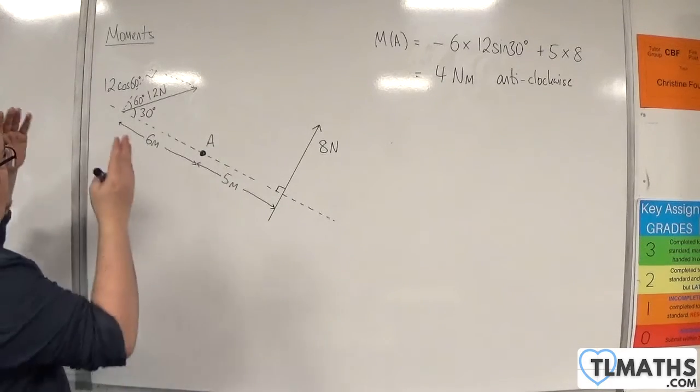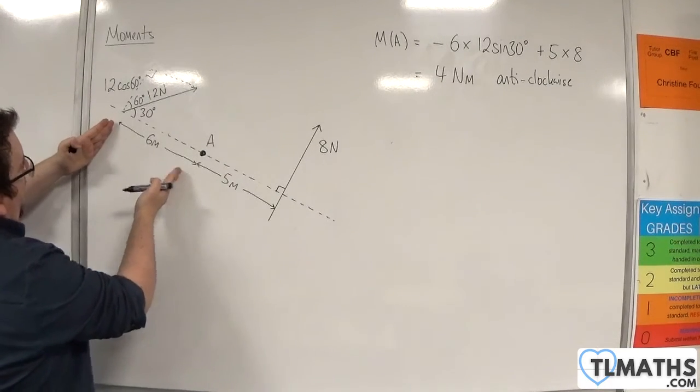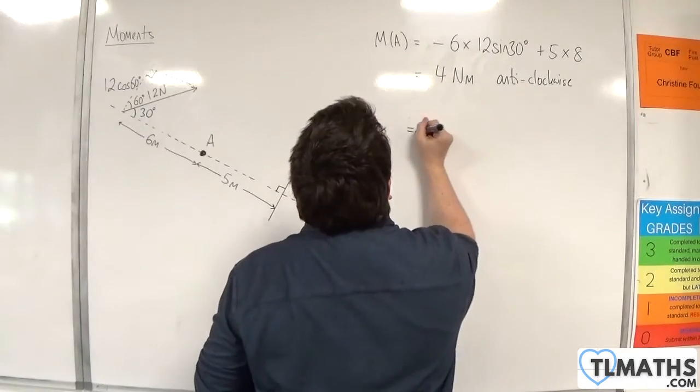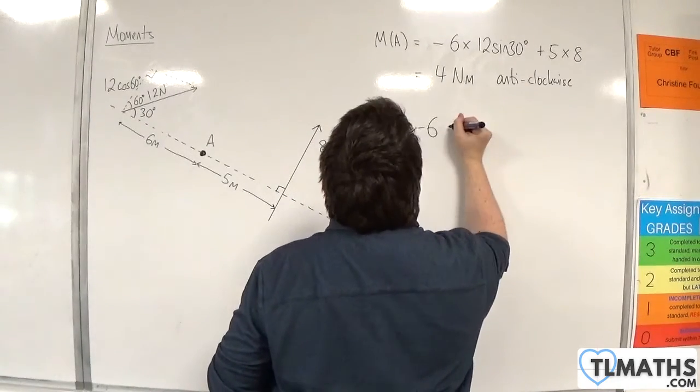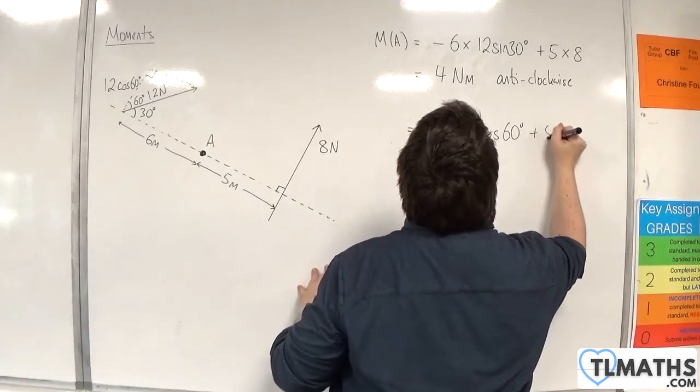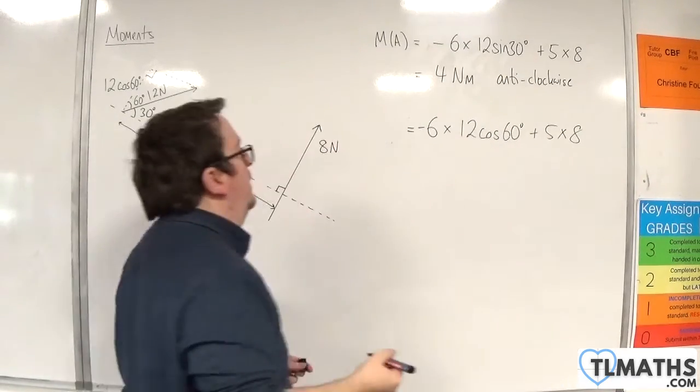So now, it's a little bit more clear that you're 6 metres away from the 12 cosine 60. So we could do minus 6 times 12 cosine 60 plus 5 times 8. OK, and that would get us the same answer.